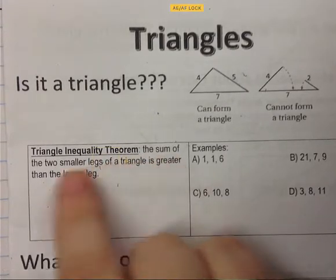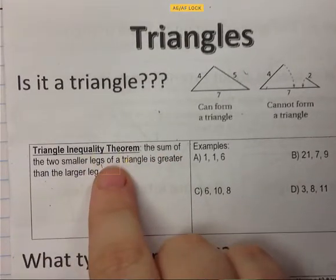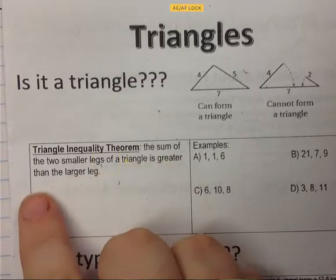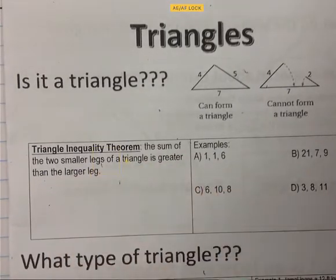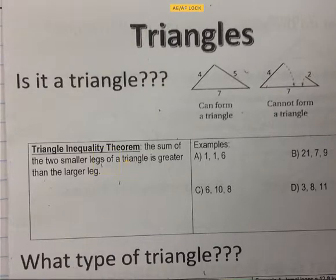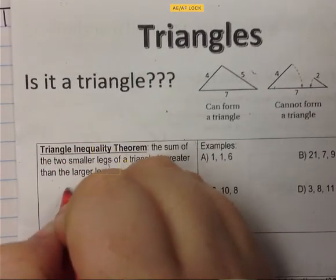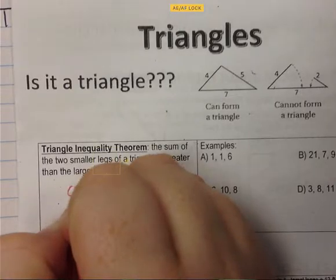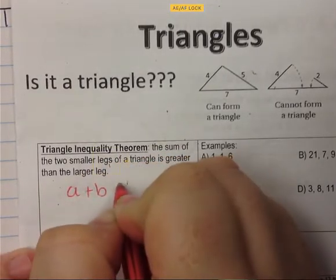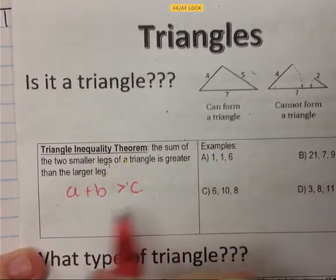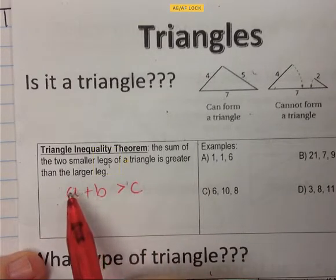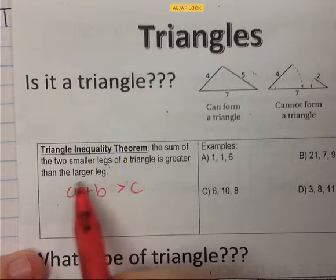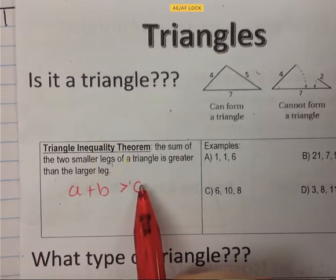So we want to understand the triangle inequality theorem. It states that the sum of the two smaller legs of a triangle is greater than the larger leg. You figure out what your two smaller sides are and determine if their sum is bigger than your third side. Using the letters: A plus B is greater than C, where A and B are the two smaller sides and C is the largest side.